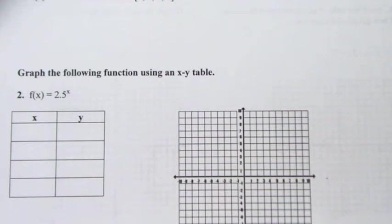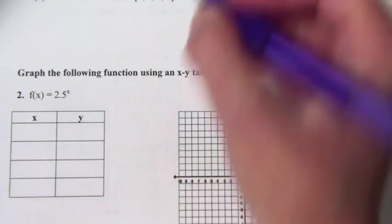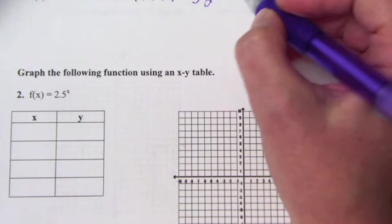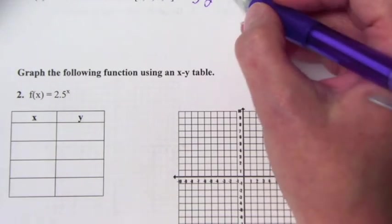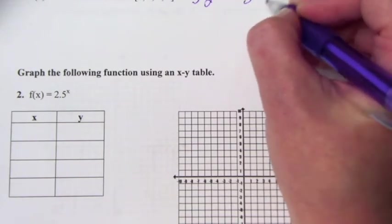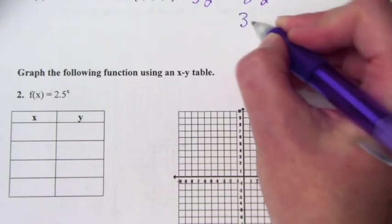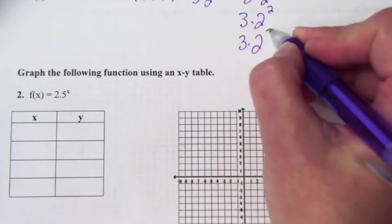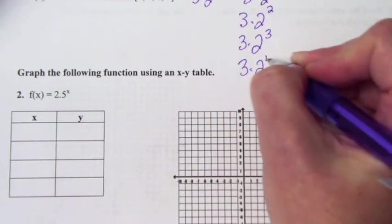For the review, let's go through number one. It says f of x equals 3 times 2 to the x power for the domain 1, 2, 3, and 4. What that means is you plug in 1, 2, 3, and 4. You can make a table if you want. So we're going to plug in four different problems: 3 times 2 to the first, 3 times 2 to the second, 3 times 2 to the third, and 3 times 2 to the fourth.